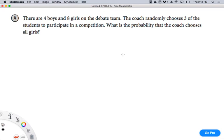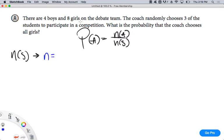There are four boys and eight girls on the debate team. The coach randomly chooses three of his students to participate in a competition. What's the probability that the coach chooses all girls? Well, it's probability. So the first thing I write down always is PA equals NA over NS. Now, NS is all the possibilities. NA is what I want or what I'm interested in. So to find NS, I explore all the possibilities. How many people am I choosing from? Twelve.